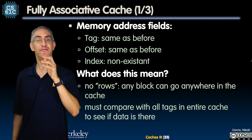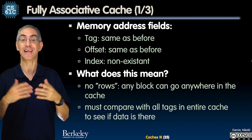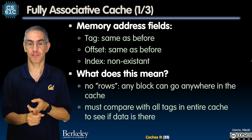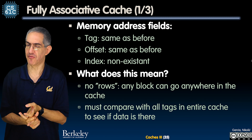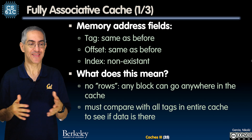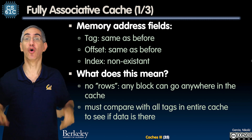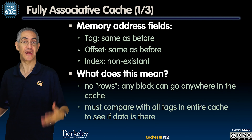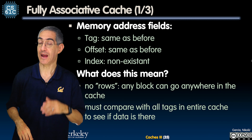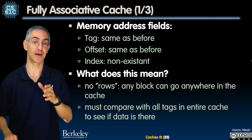A fully associative cache means you can literally go anywhere. The tag is still there, the offset is the same as before, but there's no index. The index would tell me exactly what row to go to — but there are no rows. Any block goes anywhere. Sit anywhere you want.